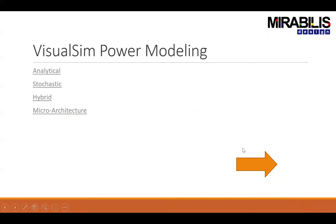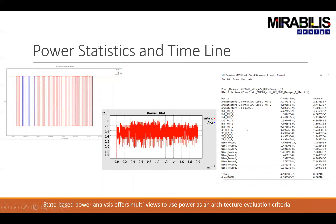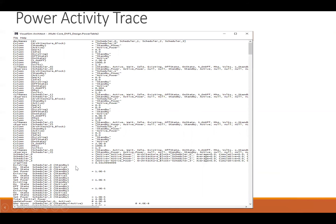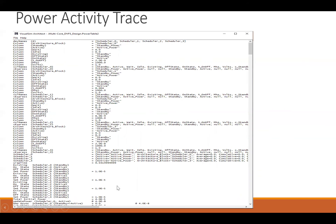The trace output shows each device transitioning to different states at specific times — on state, existing state, active, standby — and this can be fed to an external calculator. Right now we feed it into our battery model to see how spikes affect battery life cycle. We also have a simple calculator that computes heat or temperature from the changing power values. One customer takes this output and feeds it directly into their own simulator to compute thermal characteristics of the model.